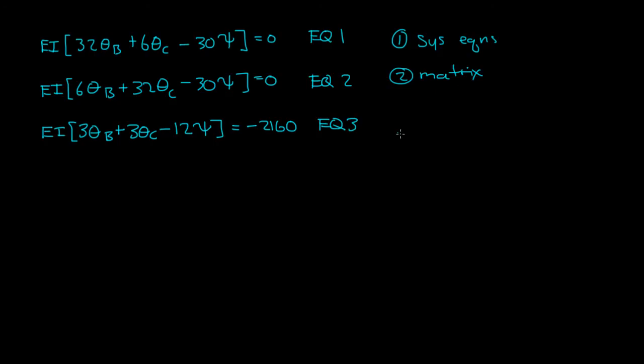In the matrix form, you have your A matrix times X equals B, where X are your unknowns and A are your coefficients. And then B are your 0, 0, negative 2160.